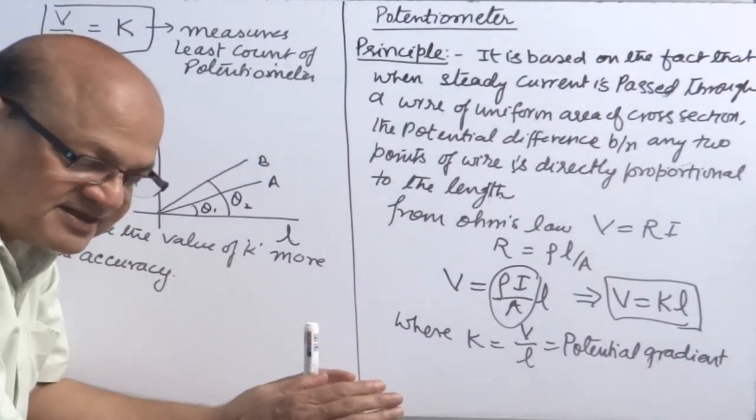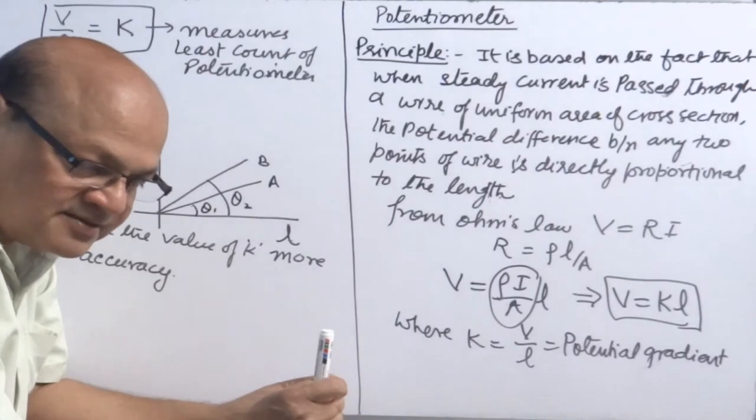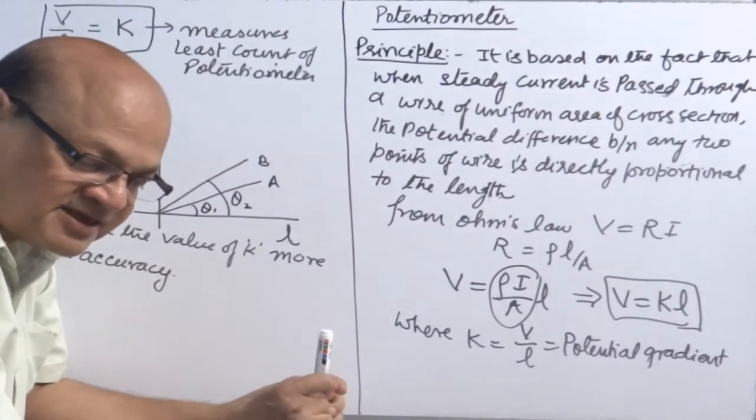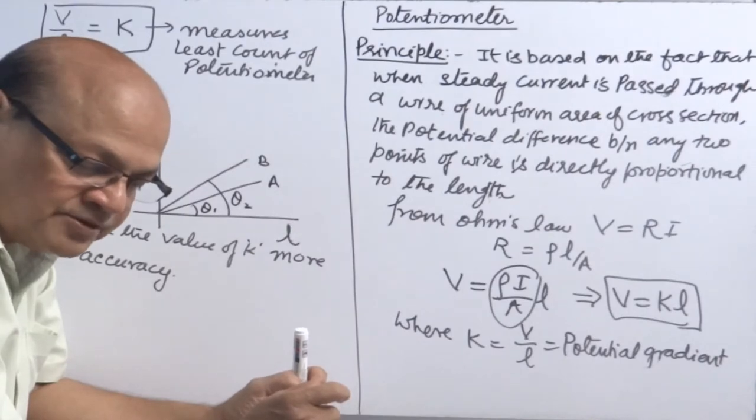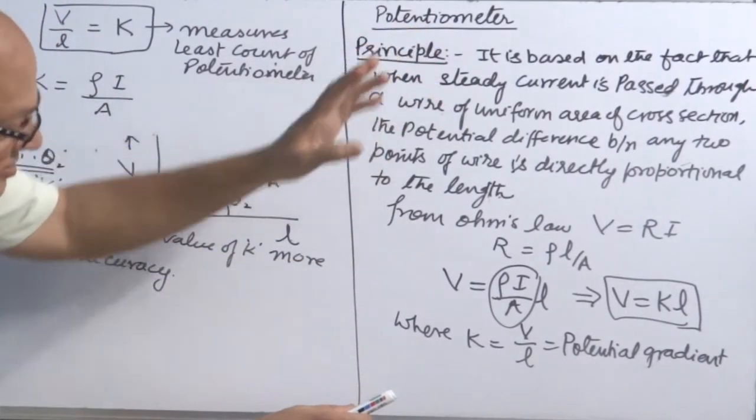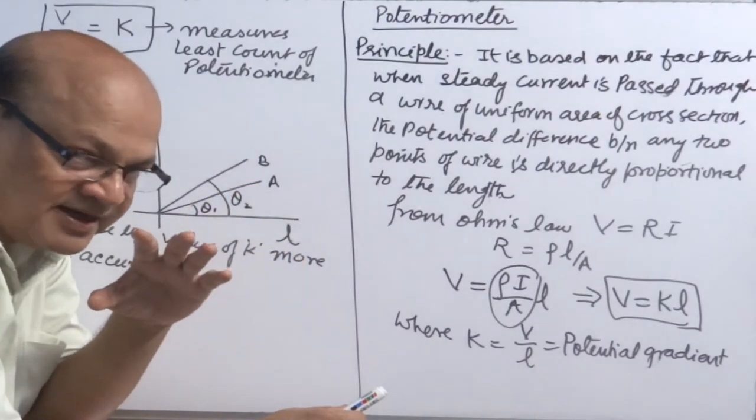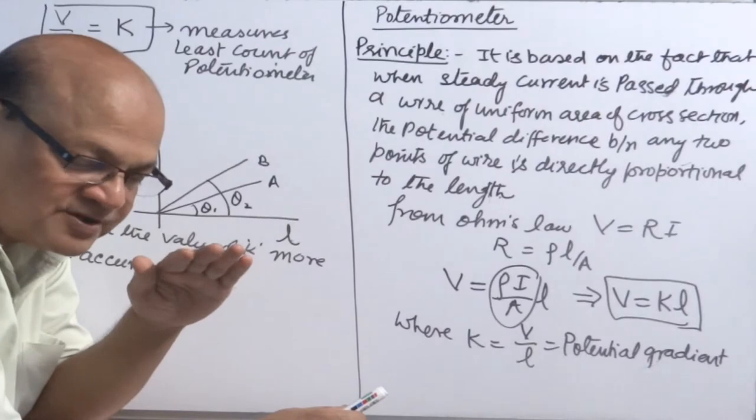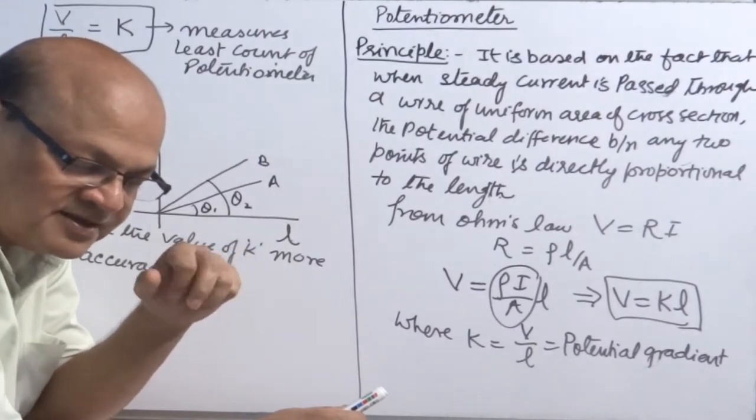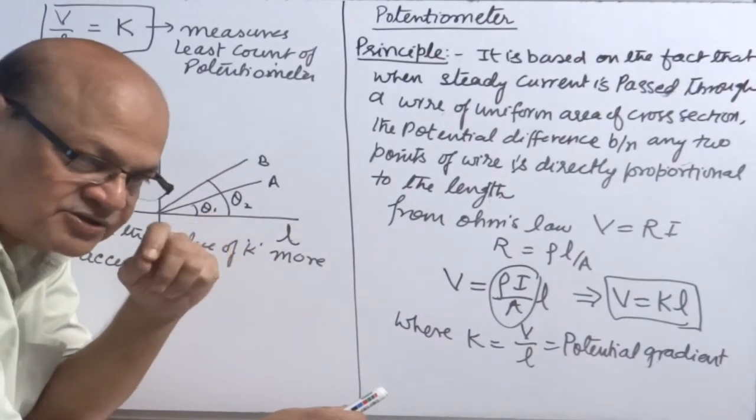As far as construction is concerned, the main difference is in meter bridge there is only one meter long wire, single turned wire stretched between two points on a wooden board. However, in potentiometer there are eight to ten meter long wire which is stretched over similar wooden board, little wider, in eight to ten turns. Each turn is of one meter long.